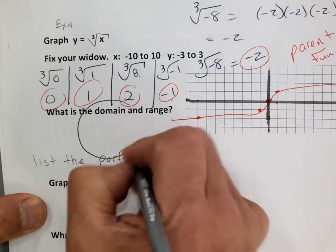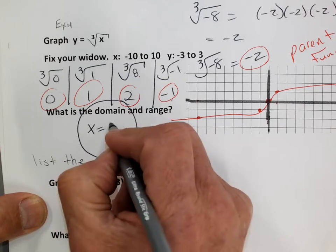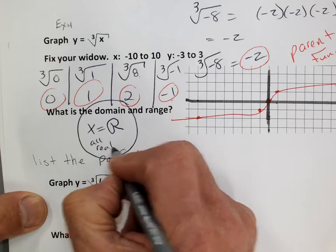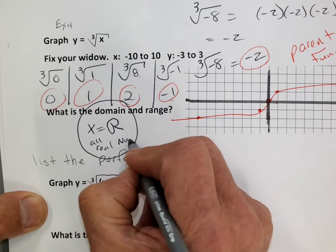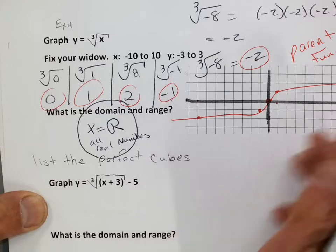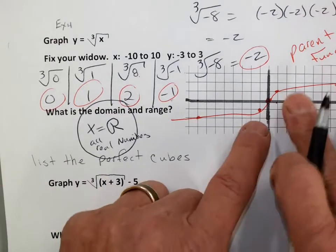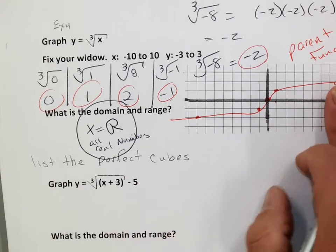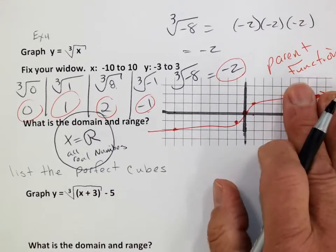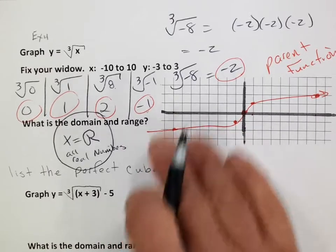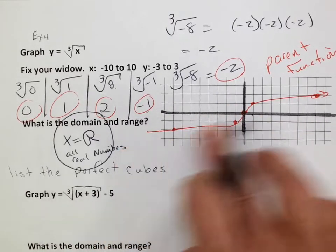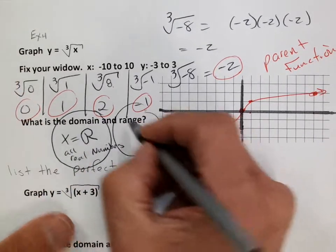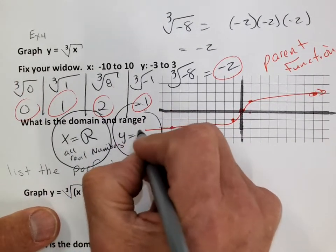Domain and range for the cube root parent function: the domain is x equals all real numbers — it's forever wide. The range: even though it looks like it's shallowing out, the graph is always going up and always going down. It's going to take a long time to get there, but it goes forever in both directions. So the range is also y equals all real numbers.